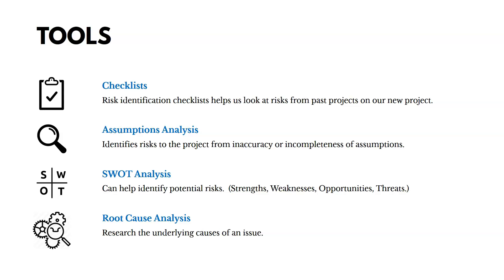Assumptions analysis involves looking at all of your plans and identifying risks based on inaccurate or incomplete assumptions. For example, if you're assuming you can get materials from a Chinese supplier at a certain price, there's a risk that political or other events could make that steel unavailable. You could also use SWOT analysis — examining strengths, weaknesses, opportunities, and threats — to identify both positive opportunities and negative threats. And root cause analysis researches the underlying cause of an issue to identify risks.